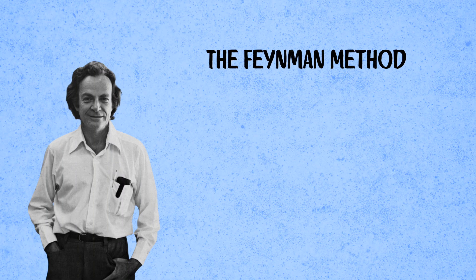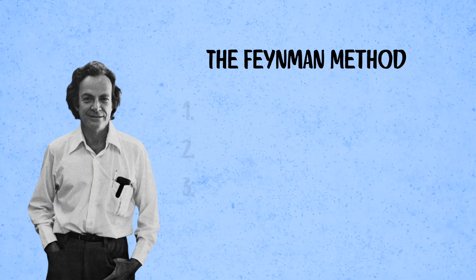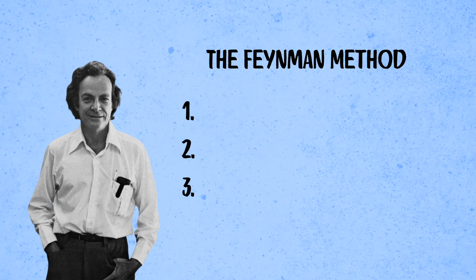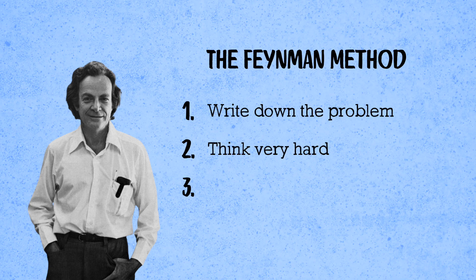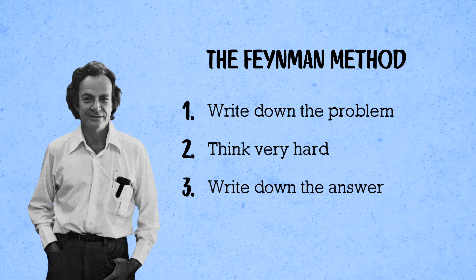It's an old physics quip that Richard Feynman's approach to solving problems was a three-step procedure. Number one, write down the problem. Number two, think very hard. And number three, write down the answer.